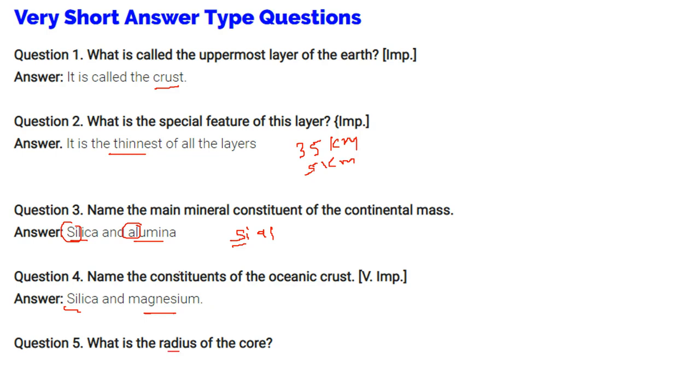What is the radius of the core? So the radius of the core is around 3500 km.